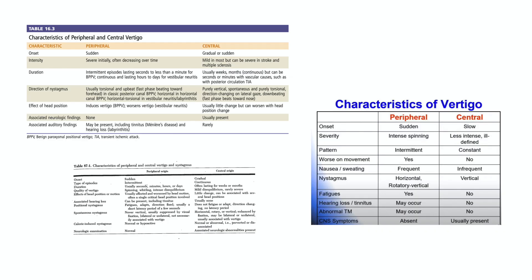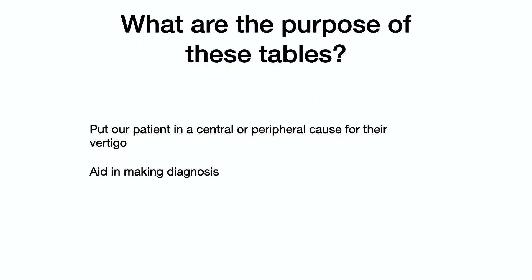I don't know who made the first central versus peripheral table, but here are three such general vertigo approach tables: the earliest one I could find, from the first edition of Rosen's Emergency Textbook; one from the current edition of Rosen's; and one posted online in a YouTube lecture in the past year whose target audience was emergency physicians. The authors likely thought that by looking at which side of the table your vertigo patient mostly fits in, you could determine if they had a central or peripheral cause, and this would help guide further assessment, disposition, and treatment.